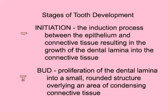There are several stages of tooth development. In the initiation stage there is an induction process of molecular signals between the oral epithelium and the underlying connective tissue, resulting in the growth of the dental lamina into the connective tissue. The bud stage comprises a proliferation of the dental lamina into a rounded structure overlying an aggregation of connective tissue cells adjacent to it.